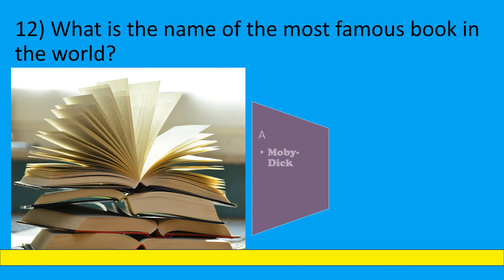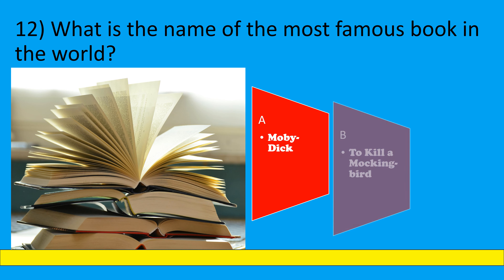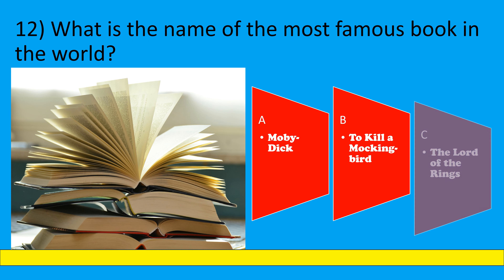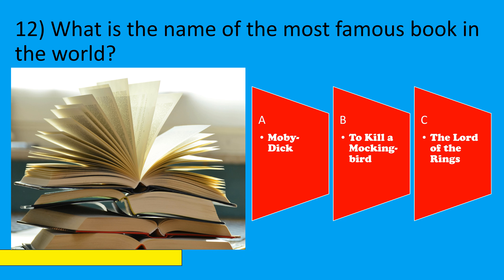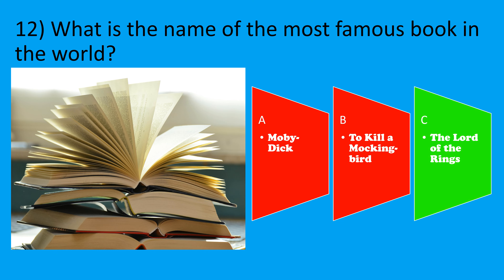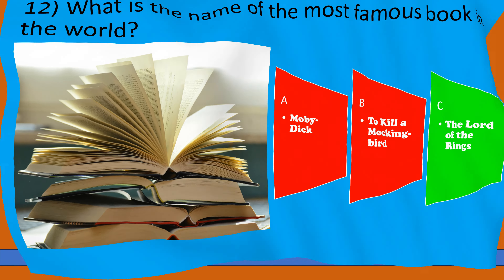What is the name of the most famous book in the world? A: Moby Dick, B: To Kill a Mockingbird, C: The Lord of the Rings. The correct option is C, The Lord of the Rings.